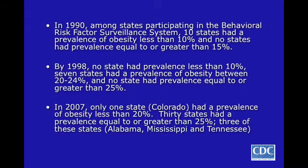But by 2007, only one state — Colorado — had a prevalence of obesity less than 20%. 30 states had a prevalence equal to or greater than 25%, and three of these states, Alabama, Mississippi, and Tennessee, had a prevalence of obesity greater than 30%.